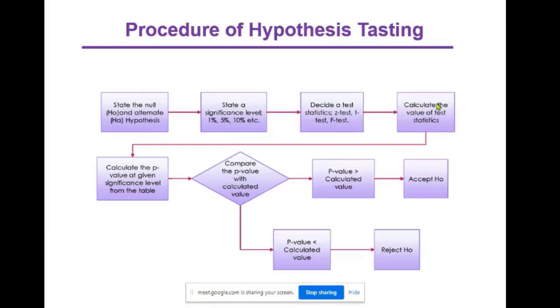Next, calculate the value of test statistics under T-test, F-test, or Z-test. Then calculate the p-value at the given significance level from the table, called the table value. This one is the calculated value.